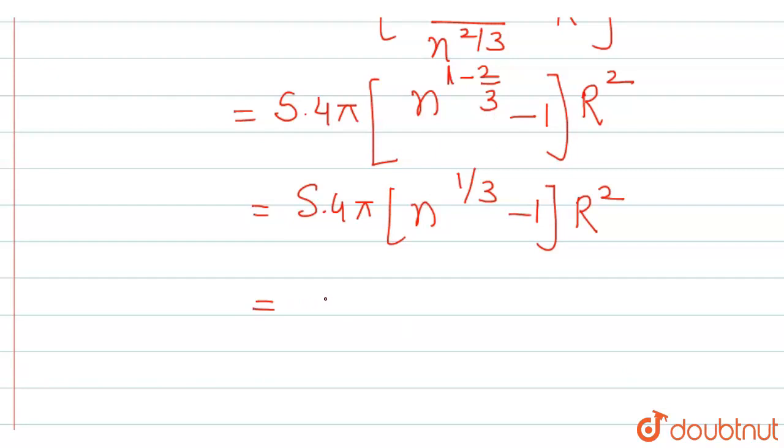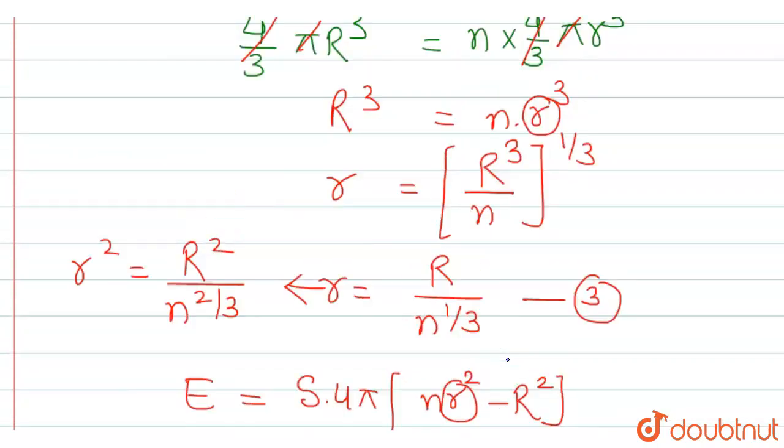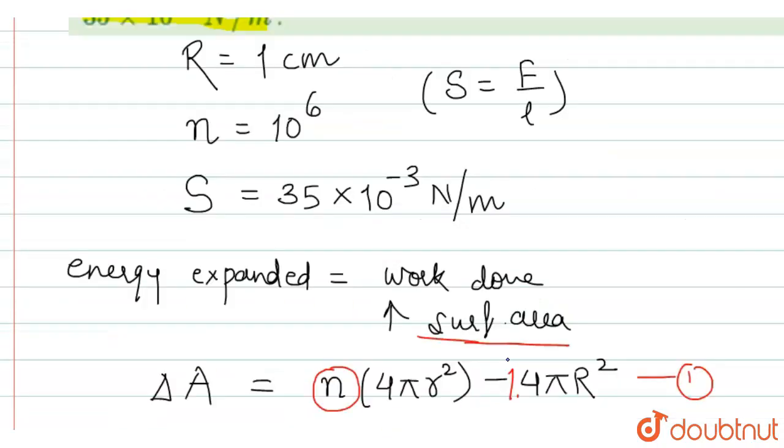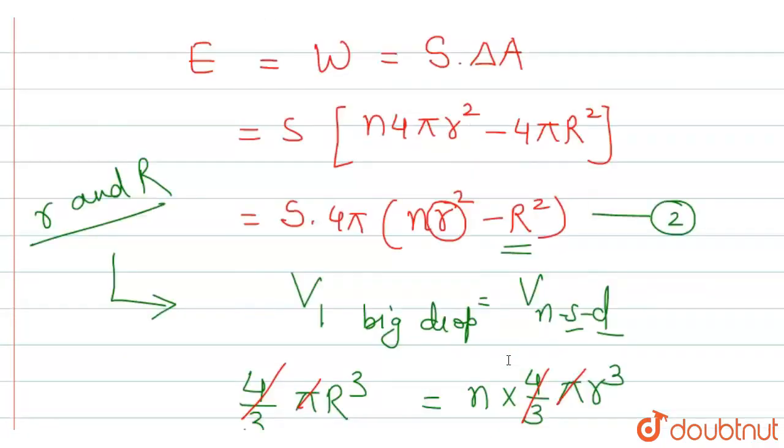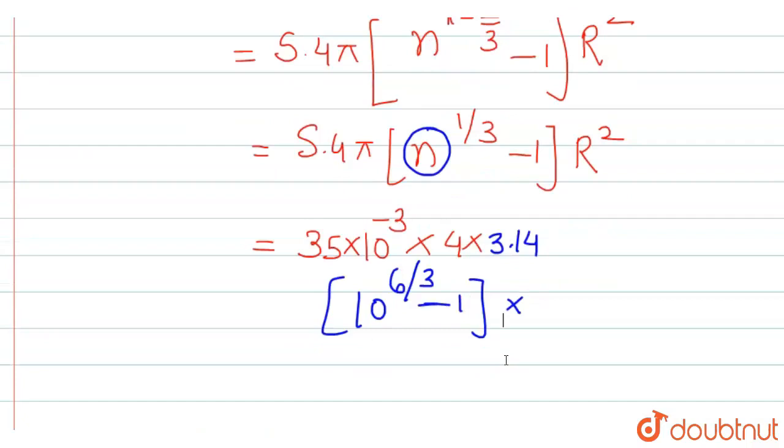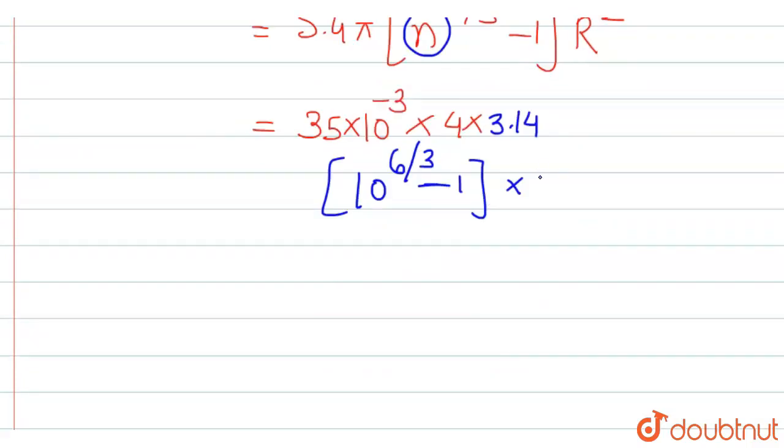As we know, the surface tension is given as 35 multiplied by 10 raised to minus 3 into 4 into, in place of pi, we can put 3.14. The value of this n is given as 10 raised to 6 by 3 minus 1 into capital R. According to the question, capital R is given as 1 centimeter. When taking in SI system, this 1 centimeter will be 10 raised to minus 2 meter and it is square because this is R square.